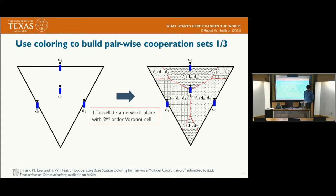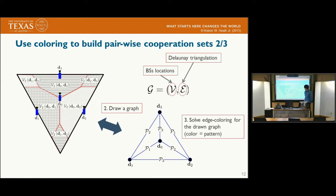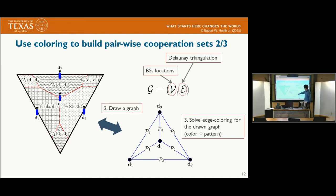We explain our method using a motivational example. We consider an equilateral triangle network. The first step is to tessellate the network plane into multiple second-order Voronoi cells. Next, we draw a Delaunay triangulation graph corresponding to these second-order Voronoi regions, and solve the edge coloring problem for this graph. We treat each color as a pattern, so we observe that no vertex shares the same pattern. For example, vertex D0 meets pattern 1, pattern 2, and pattern 3, but no two edges of the same pattern are connected to the same vertex.